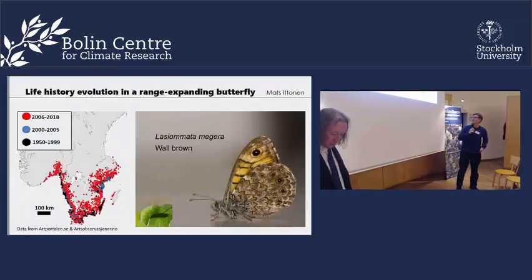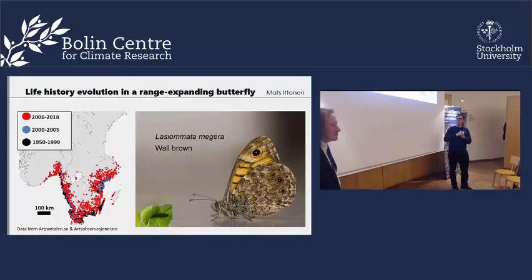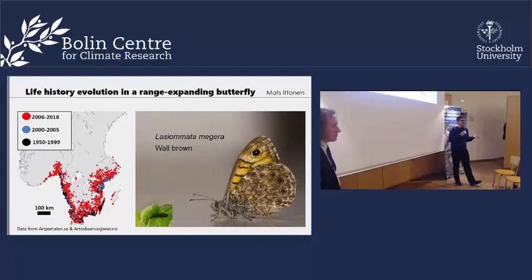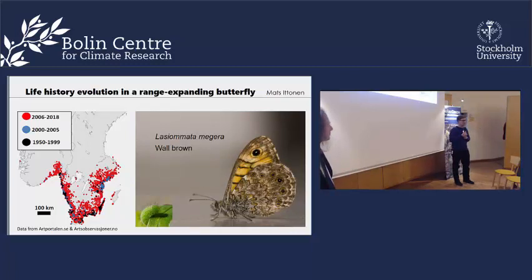I'm Matsi Tonnen, a new PhD student at the Department of Zoology at Stockholm University. I don't have any data yet, so I'll show you what I'm going to do in my PhD. On the map you see the distribution of the wall brown butterfly, and the red area is the most recent distribution — it seems to have expanded quite a lot northwards in Sweden and Norway. When a species expands northwards, it has to adapt to new conditions. Even if the shift is driven by climate change, some aspects of the environment won't change — for example, day length is important for insects as they time their diapause according to it. I will study how these populations potentially adapt to new conditions at the northern range margin.